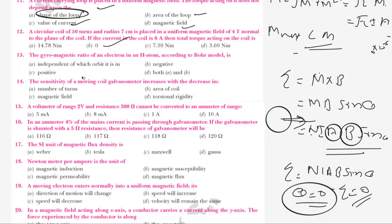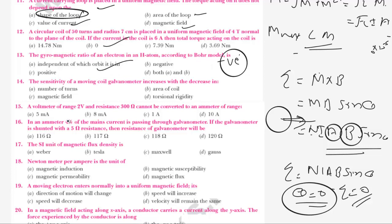Question 13: The gyromagnetic ratio of an electron in a hydrogen atom according to the Bohr model is always negative and is independent of which orbit the electron revolves around.